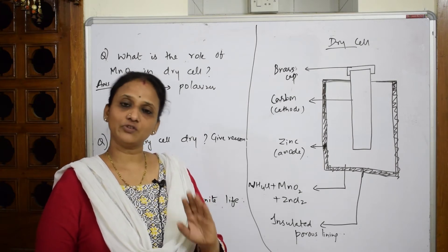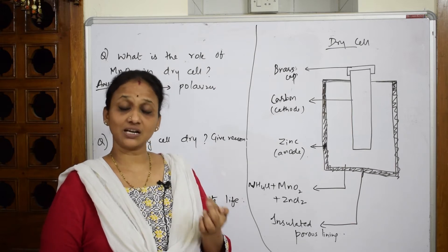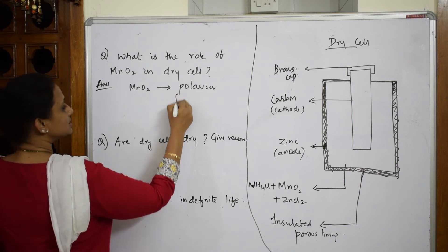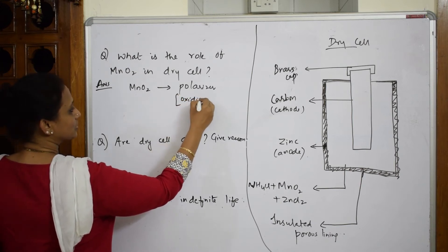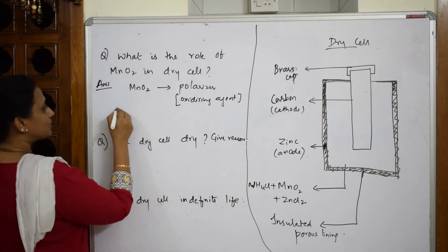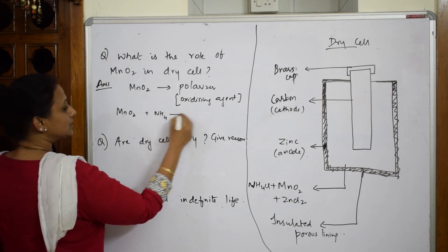So basically if I have to say, polarizers are those which will participate in the reaction. They act as oxidizing agents and how can I prove this? When I have to see, let me write polarizer, that is oxidizing agents. You can write this like this.